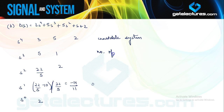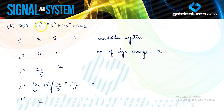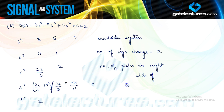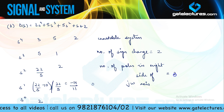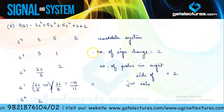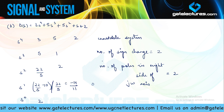Looking at the number of sign changes in the first column: the sign changes from positive to negative (first change), then negative to positive (second change). Number of sign changes is 2, which means that out of the 4 roots, 2 roots are lying in the right side of the j-omega axis — so 2 poles lie in the right half of the S-plane.